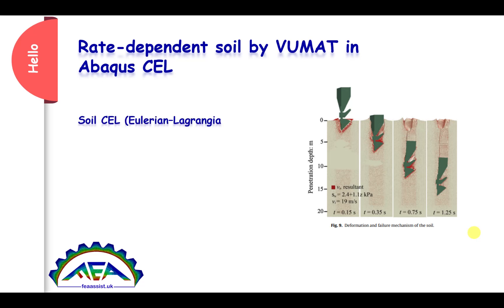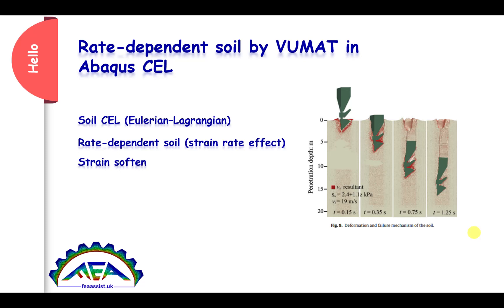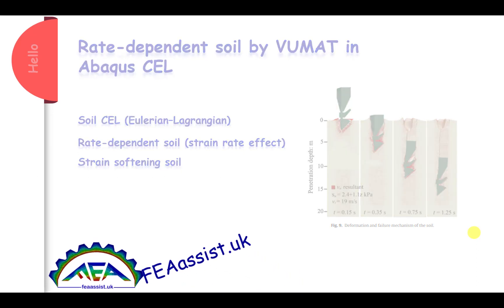CEL is the coupled Eulerian-Lagrangian method in which we have some Eulerian parts and some Lagrangian parts. In rate-dependent behavior, we are going to study the strain rate effects during the deformation, also the strain-softening behavior of the soil. To understand that, stay with us.